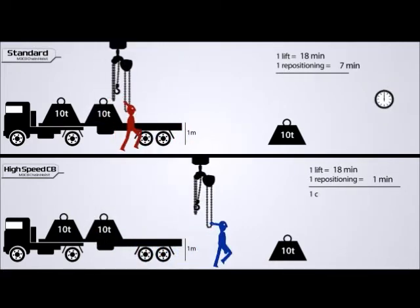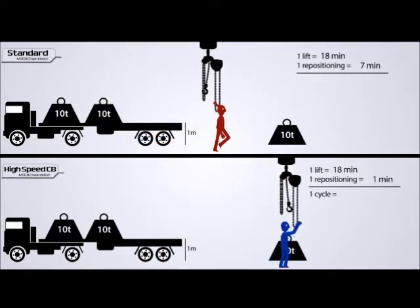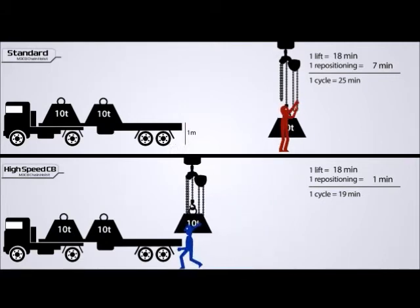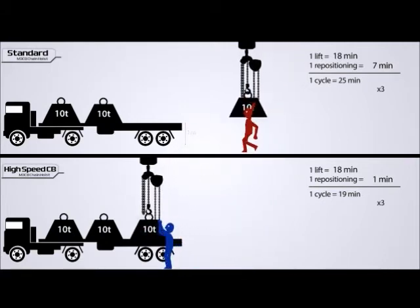To complete one full lift cycle, it takes the blue operator 19 minutes, whereas the red operator requires 25 minutes. When multiple lifts are involved, the time savings add up quickly.